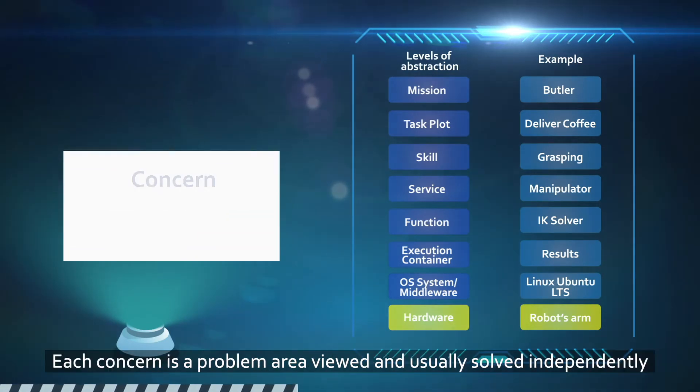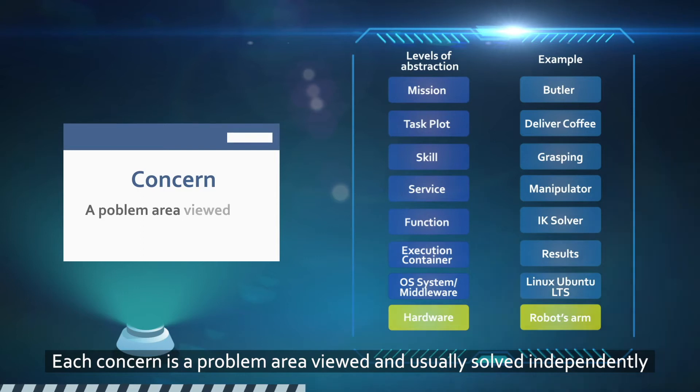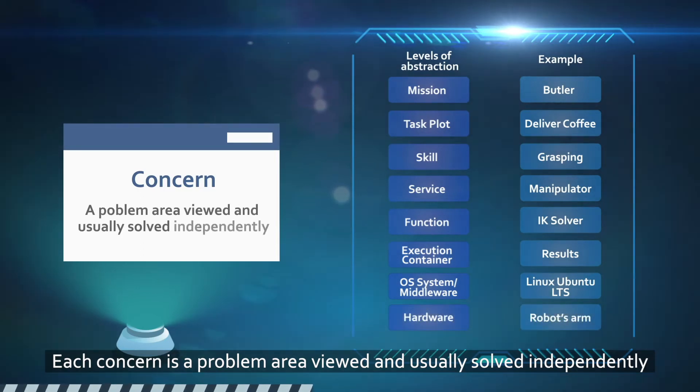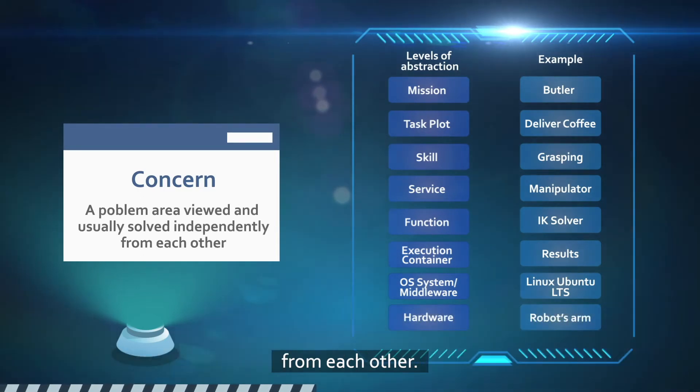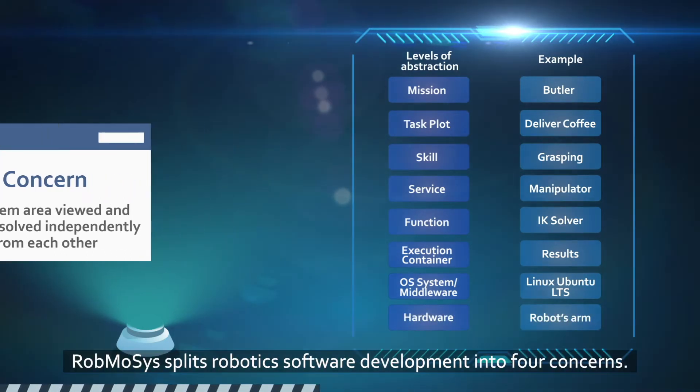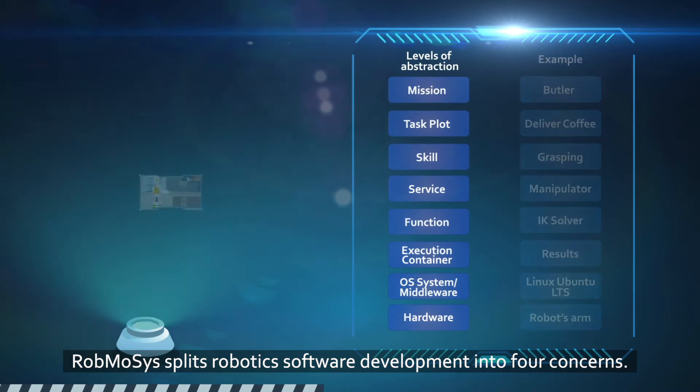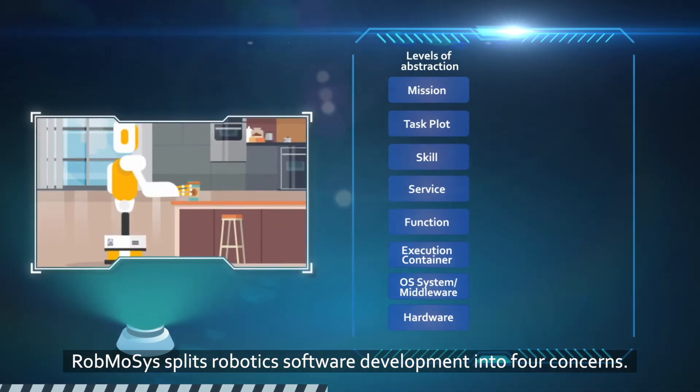Ari's abstractions are divided into concerns as well. Each concern is a problem area viewed and usually solved independently from each other. Robmosis splits robotic software development into four concerns.